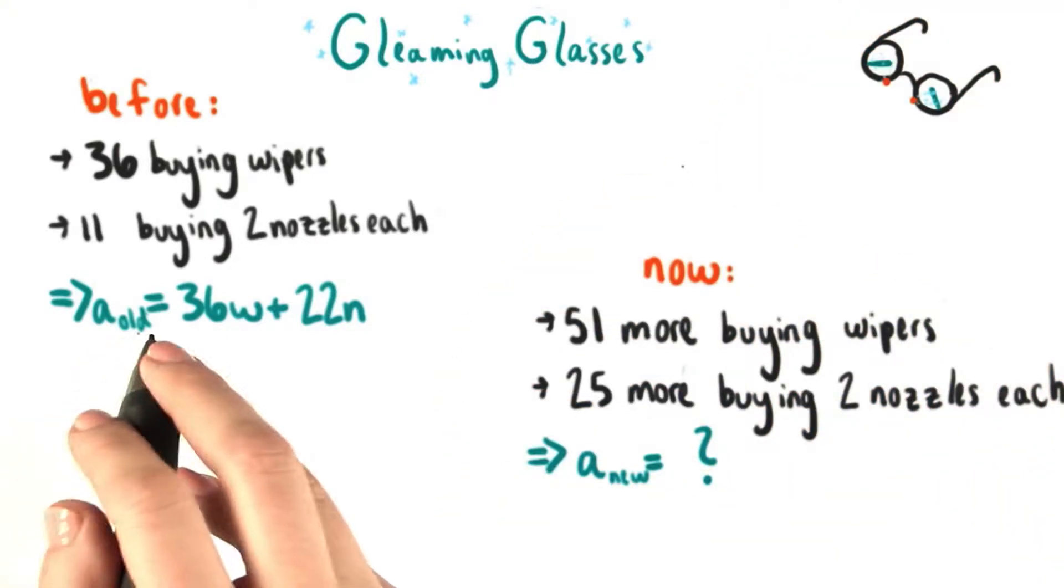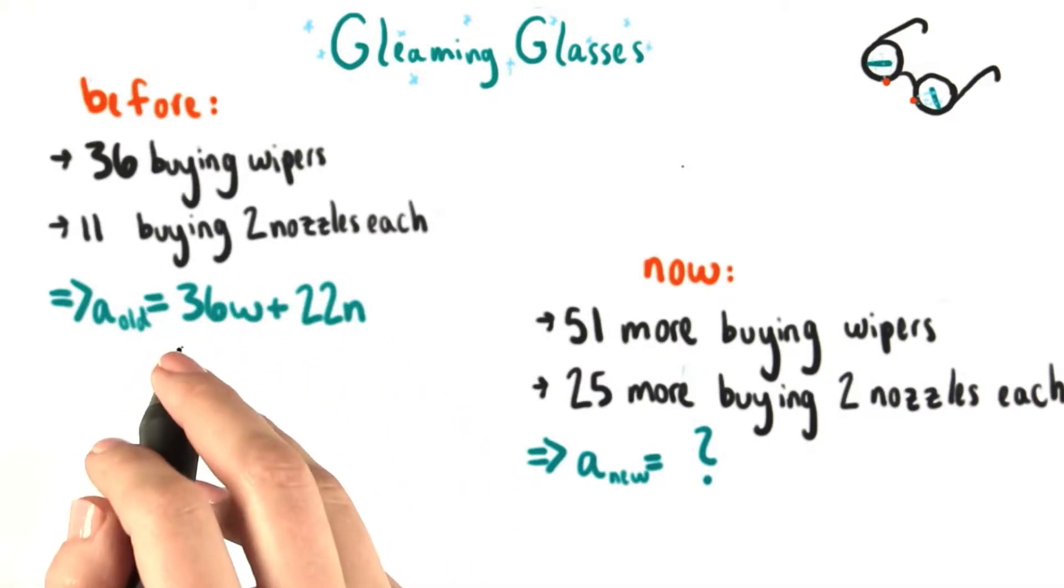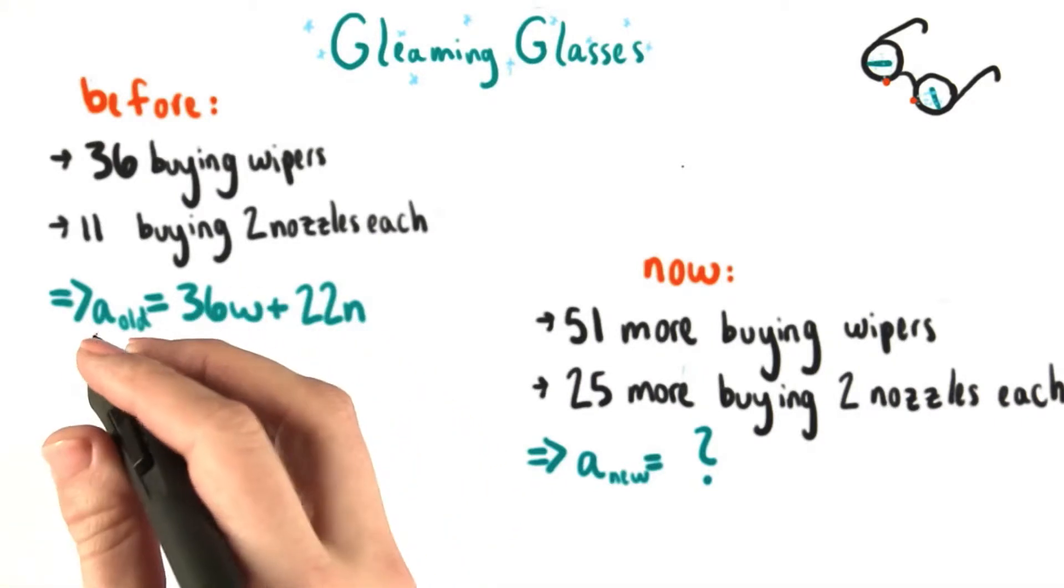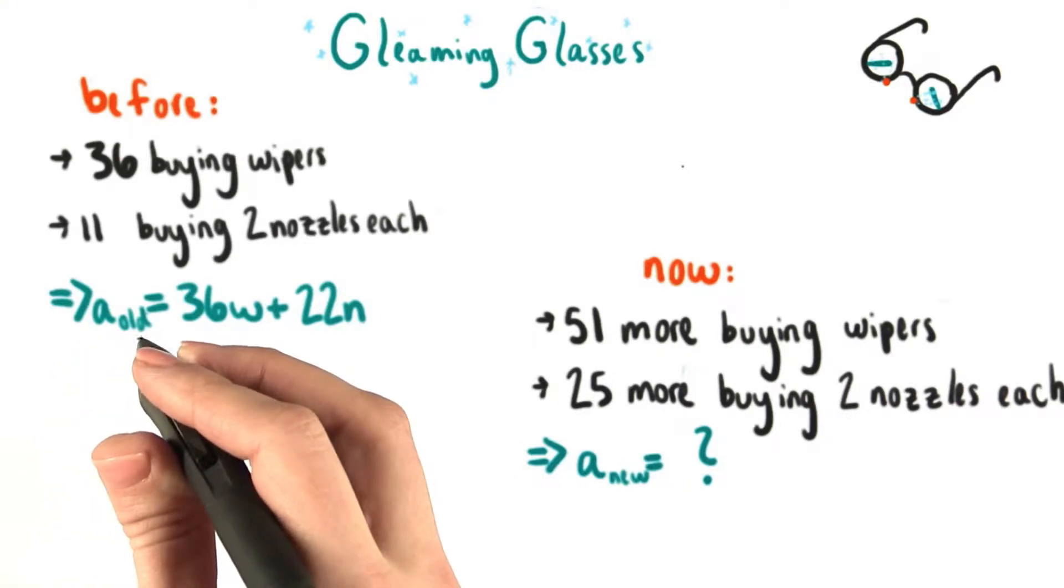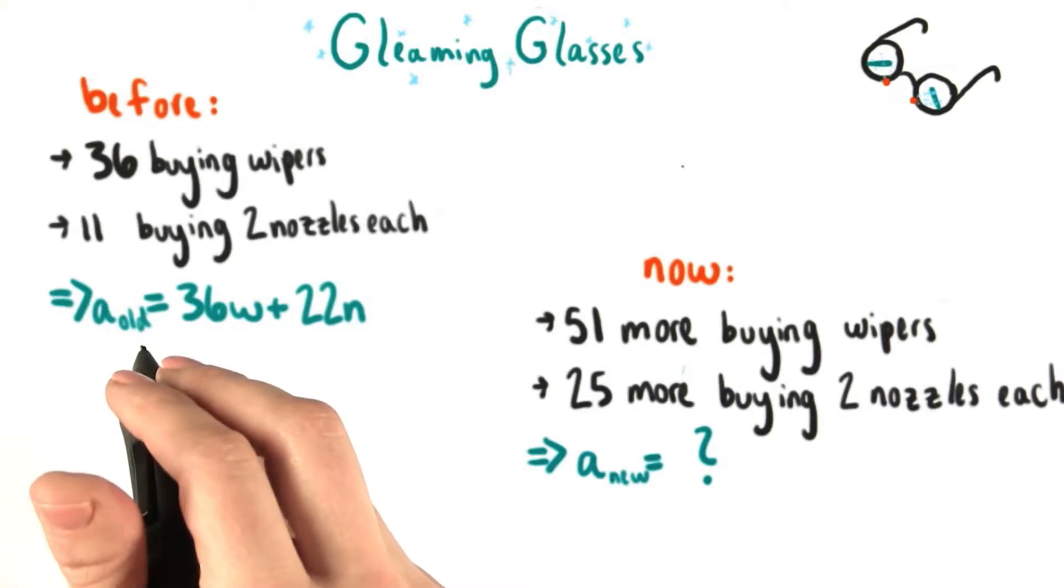The last equation that we came up with, a equals 36w plus 22n, had to do with just the sales from the first day. So I changed the name of the total money earned to A old to show that this is the money earned after the first day of selling.